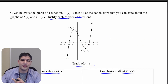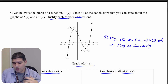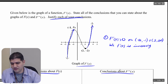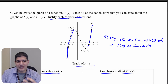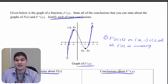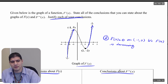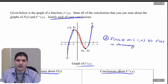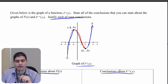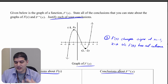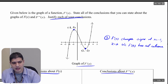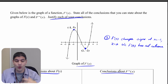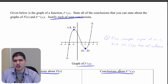For the second derivative: where f prime is increasing — between negative infinity and negative 1, and 2 to infinity — the second derivative is greater than zero, so it's positive. Between negative 1 and 2, since f prime is decreasing, the second derivative is negative. Lastly, the second derivative is changing signs at x equals negative 1 and x equals 2 because f prime has relative extrema there.